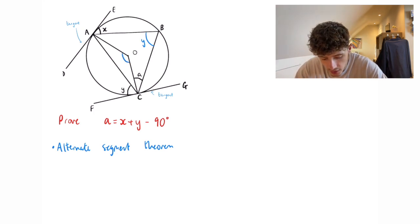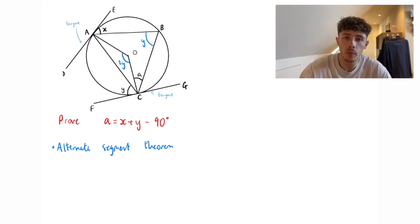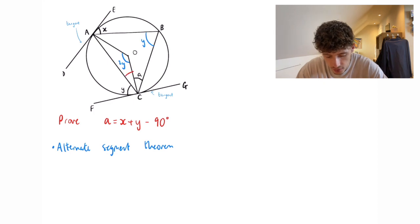So we can say that this angle here is 2y. If we look on the opposite side of the triangle, where angle x is, we can also use the alternate segment theorem for the angle of ACB and that is going to be x.